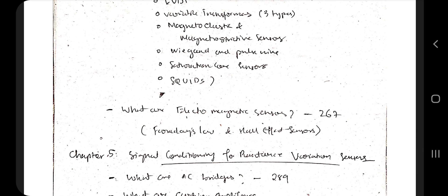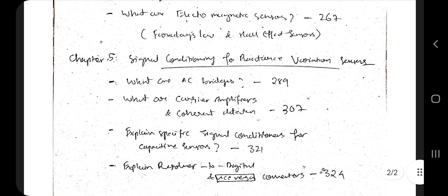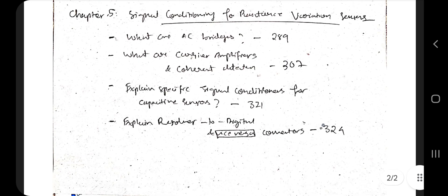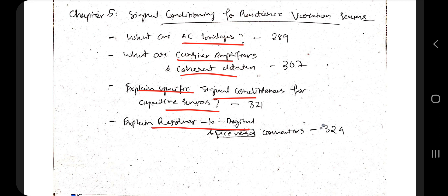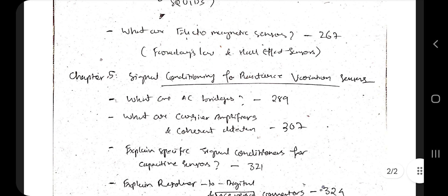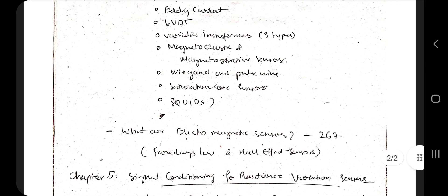There are subtopics as well, and we will be briefly going through those subtopics. Then we will move on to Chapter 5, where the important topics are AC bridges, carrier amplifier, coherent detection, specific signal conditioning for capacitive sensors, and resolver-to-digital and digital-to-resolver converters. Some subtopics are there, and we will go through those.